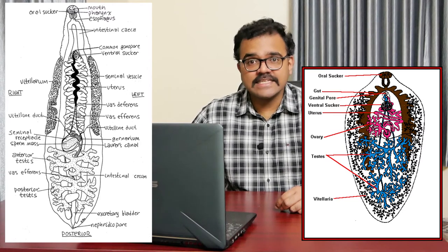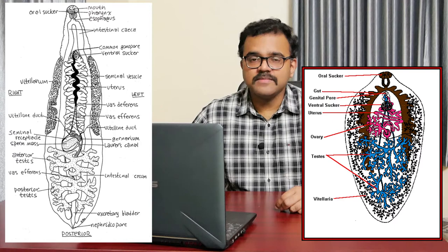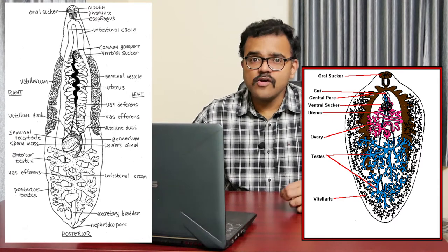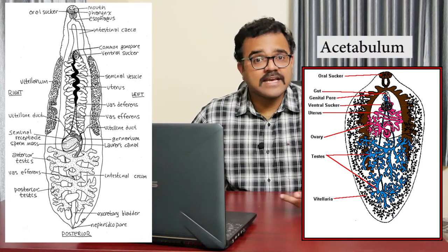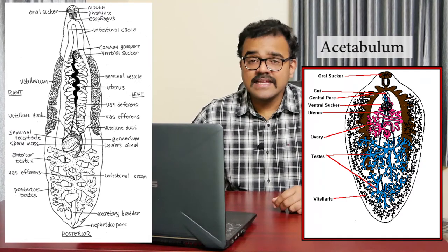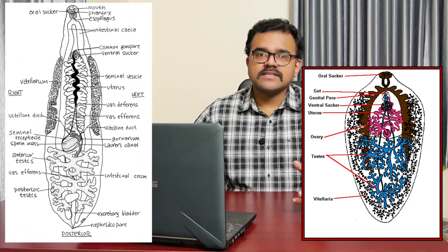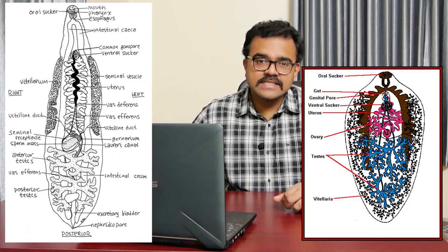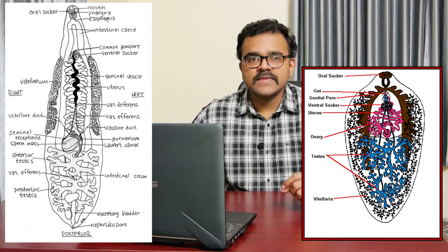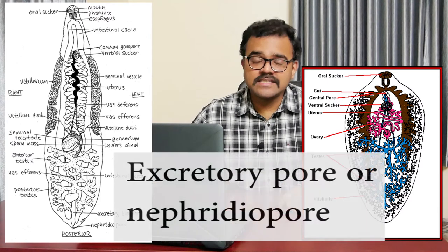On the ventral surface, a little below the head lobe, is a posterior sucker or ventral sucker, also called the acetabulum. It is bigger in size than the anterior sucker. Between the two suckers, and close to the posterior sucker, is a pore called the genital pore. The excretory aperture is situated at the extreme posterior tip of the body.